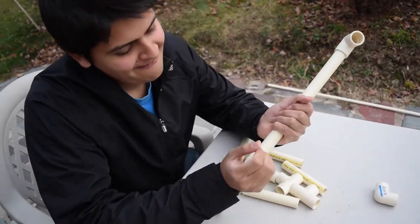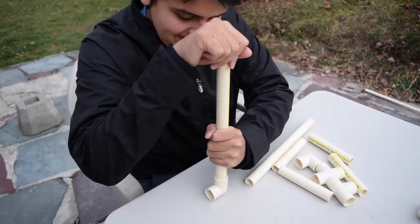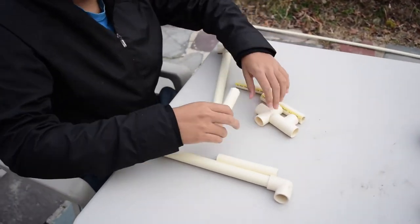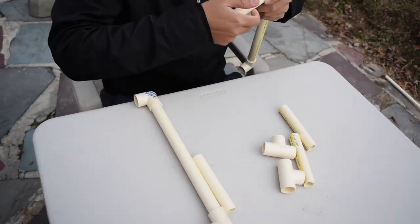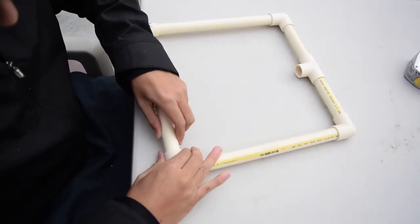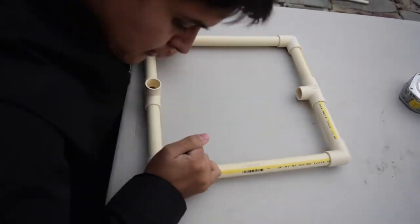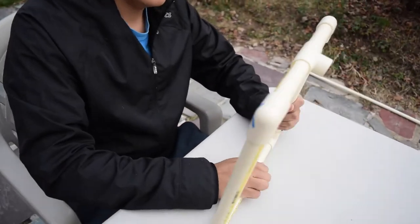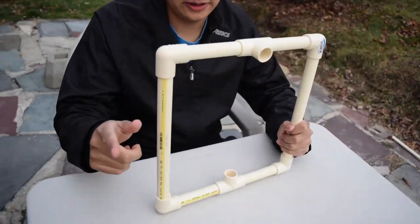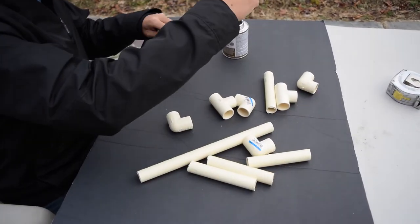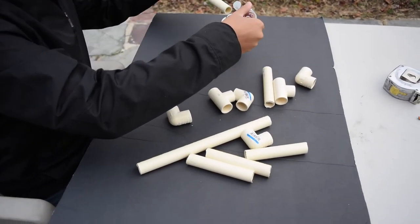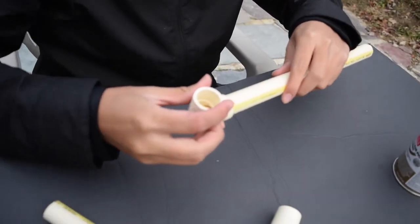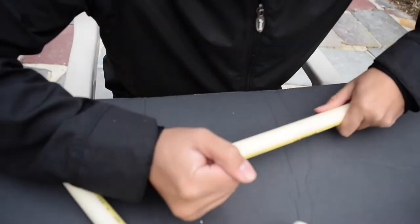Now you put the shorter ones on top and BAM. Now we glue it. I got this glue, put it on the edges, squeeze it in.